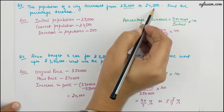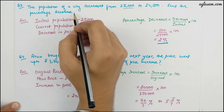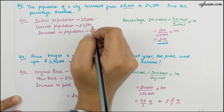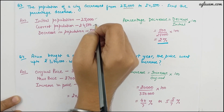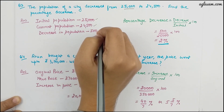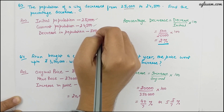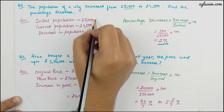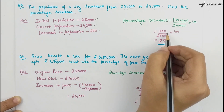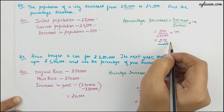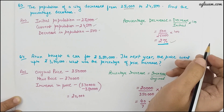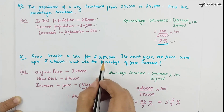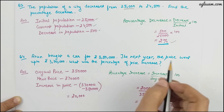Question 3: the population of a city decreased from 25,000 to 24,500. We need to find the decrease in percentage. The initial population is 25,000 and current is 24,500, so the decrease is 500. Decrease percent is 500 divided by 25,000 multiplied by 100, giving 2 percent as the decrease in population.